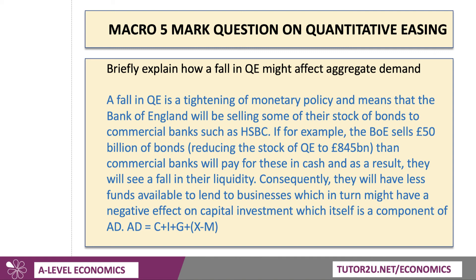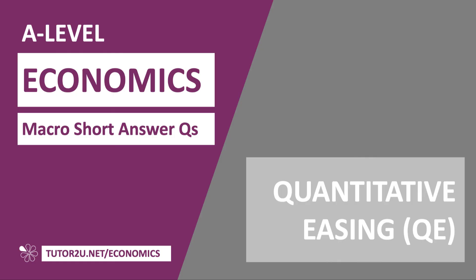That's the way to write a five marker. Don't overwrite. Just explain what QE is, explain what a fall in QE represents, include a couple of bits of application, and a couple of nice connectives to build that chain of reasoning. That was my answer — a five marker on quantitative easing.